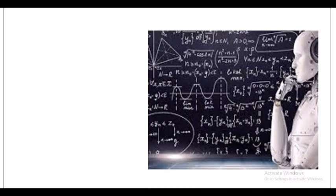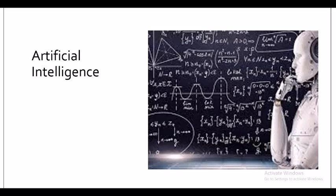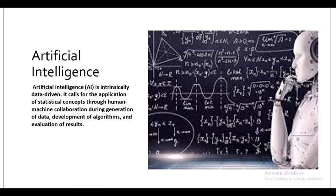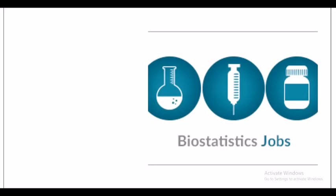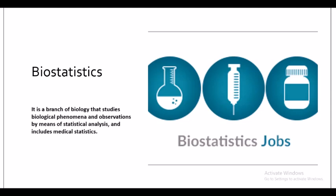Artificial intelligence, or AI, is one of the most upcoming fields of today's world. Statistical concepts are intensively used during the generation of data, development of algorithms, and evaluation of results. Biostatistics is a branch of biology that studies biological phenomena and observations by means of statistical analysis, and includes medical statistics.